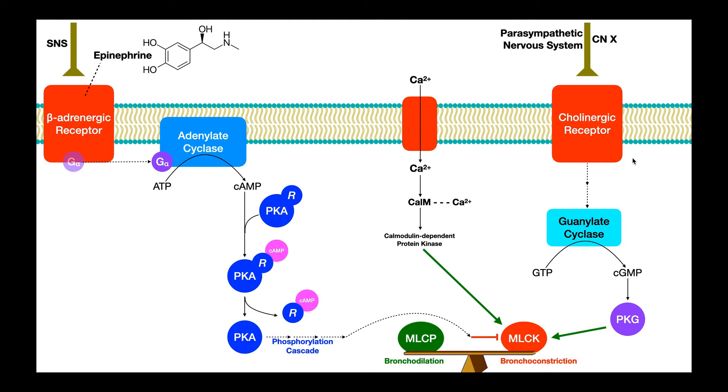These other two pathways right here are going to produce bronchoconstriction. And they're going to do that by activating this myosin light chain kinase. Remember when this becomes activated, it leads to cross-bridge cycling in smooth muscle and that leads to contraction of the smooth muscle and then constriction. So activate this enzyme, you'll get bronchoconstriction.